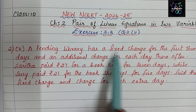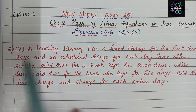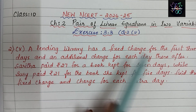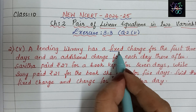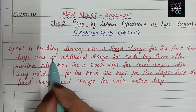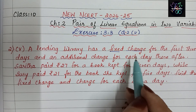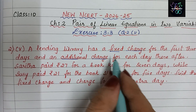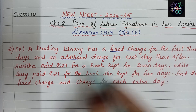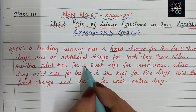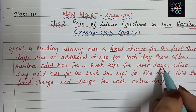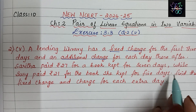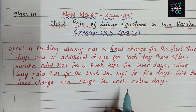Let us read the question. A lending library has a fixed charge for the first three days, and an additional charge for each day thereafter. Sarita paid rupees 27 for a book kept for seven days, while Sassy paid rupees 21 for the book she kept for five days. Find the fixed charge and the charge for each extra day.